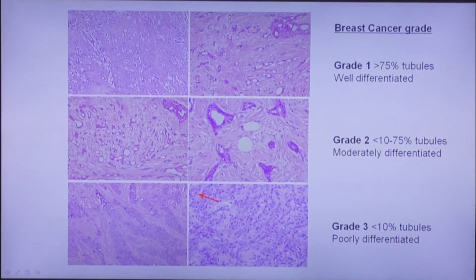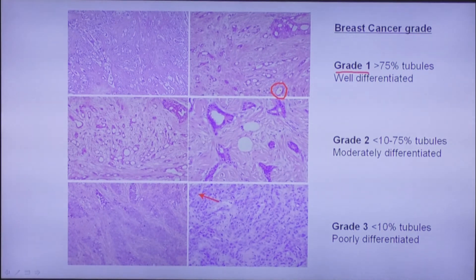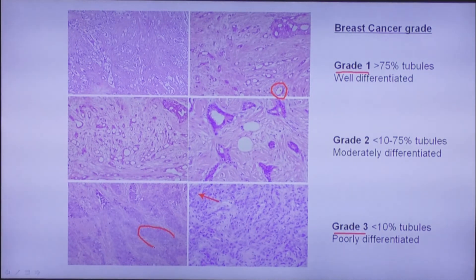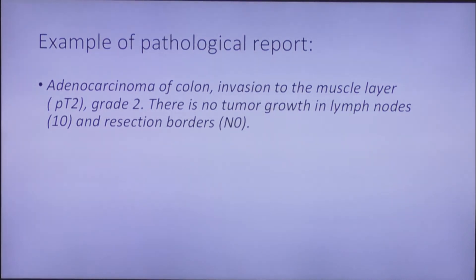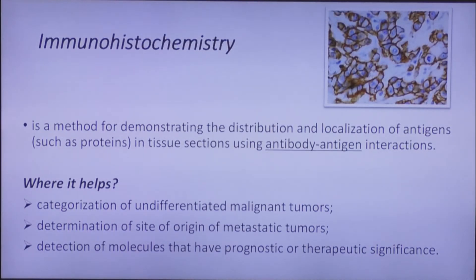Here is an example of breast cancer grading. Grade 1 is assigned when more than 75% of the tumor consists of tubules with a lumen that still resemble normal ducts of the breast. The more poorly differentiated the tumor, the higher the grade assigned — at Grade 3, we do not see ducts with a lumen. This is an example of a pathological report: carcinoma of the colon with invasion to the muscle layer, pT2, Grade 2, with no tumor growth in lymph nodes or resection borders.